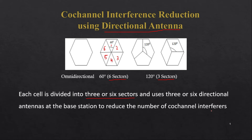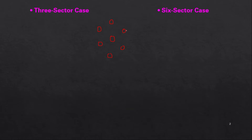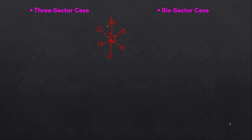Now let's discuss how sectoring can reduce co-channel interference. Recall the case of the omnidirectional antenna, where all six surrounding cells were creating interference to a user at the center cell — giving us six interfering cells. But if we use a sectoring concept, each and every cell will be divided into three sectors.